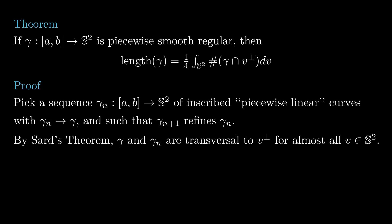By Sard's theorem, for almost all directions v in S2, the equator v-perp intersects gamma and gamma n transversely for all n. For these v's, the number of intersections between v-perp and gamma n increases as n goes to infinity to the number of intersections between v-perp and gamma.